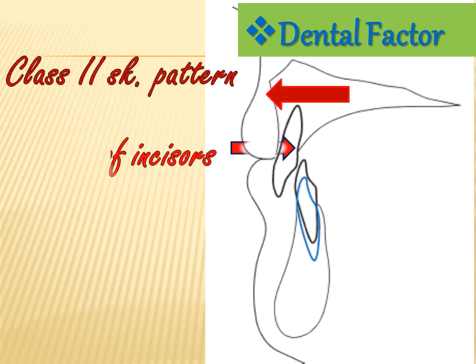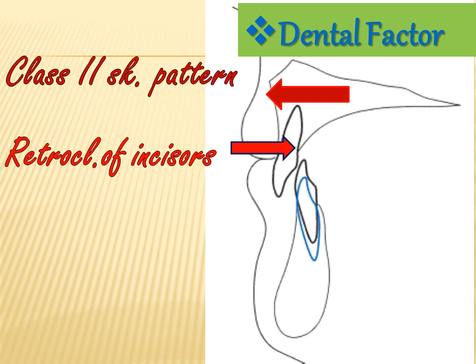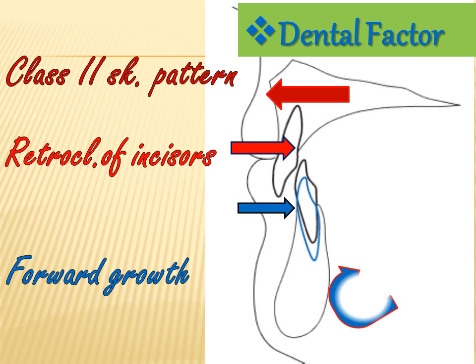In Class 2 Division 2 malocclusion, there is a forward displacement of the maxilla combined with retroclination of the upper incisors. These two features commonly result in a lack of occlusal or incisor stop for the lower incisors. The dentoalveolar part of the lower jaw in the incisor region will thus undergo continuous occlusal overgrowth, especially when combined with forward growth of the lower jaw and a reduction in vertical dimension, causing the lower incisors to overgrow upward, with lingual tipping leading to a deep or traumatic overbite.